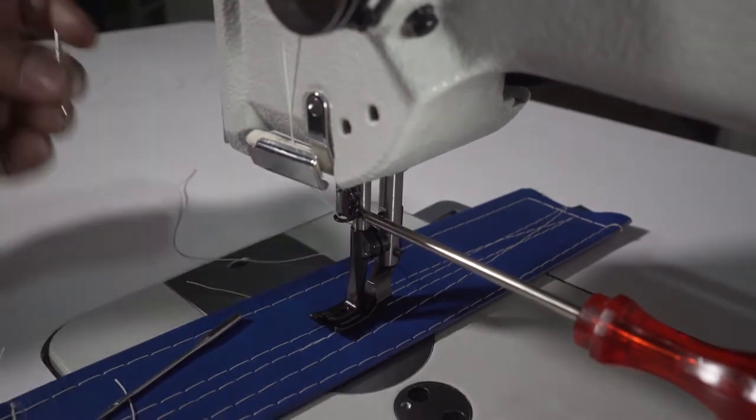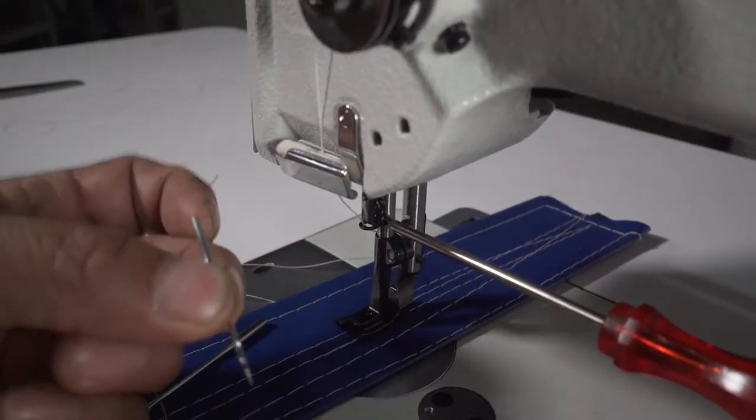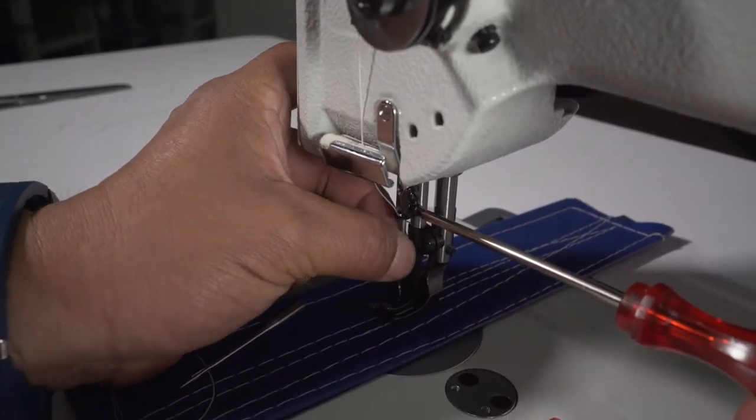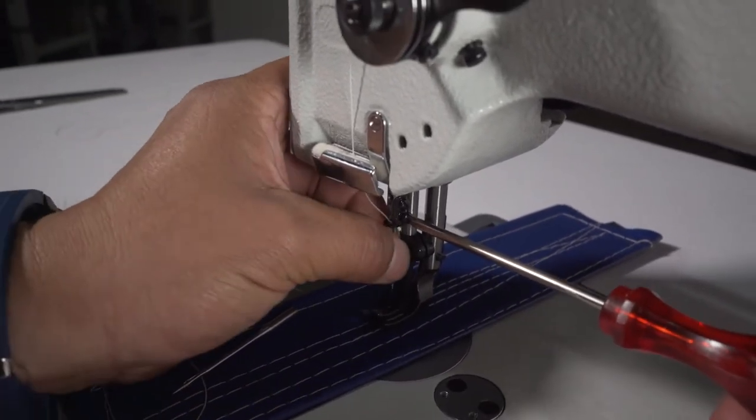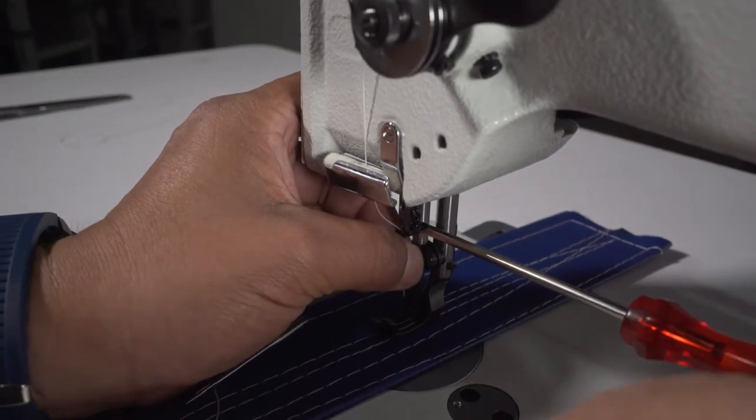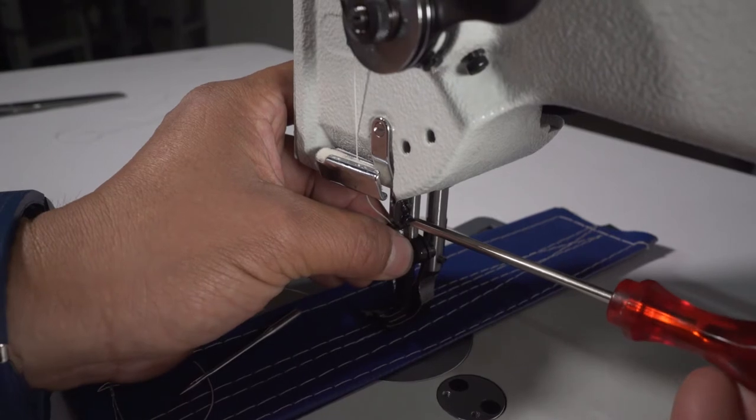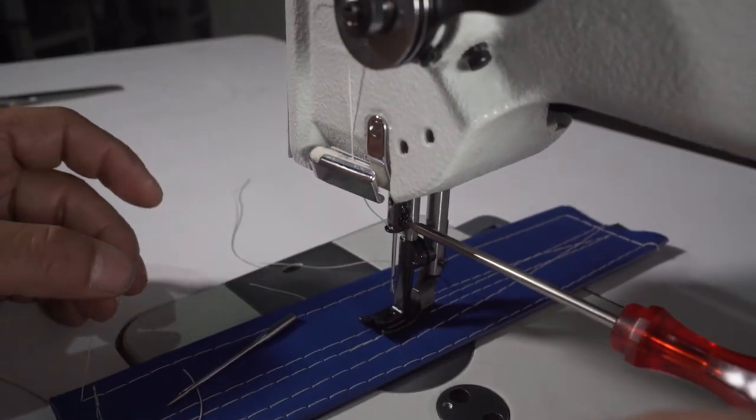Remove the old needle and put the new needle into the machine. Keep in mind the scarf has to point to the right side of the machine. You have to put the needle all the way in. Once all the way in, tighten it.